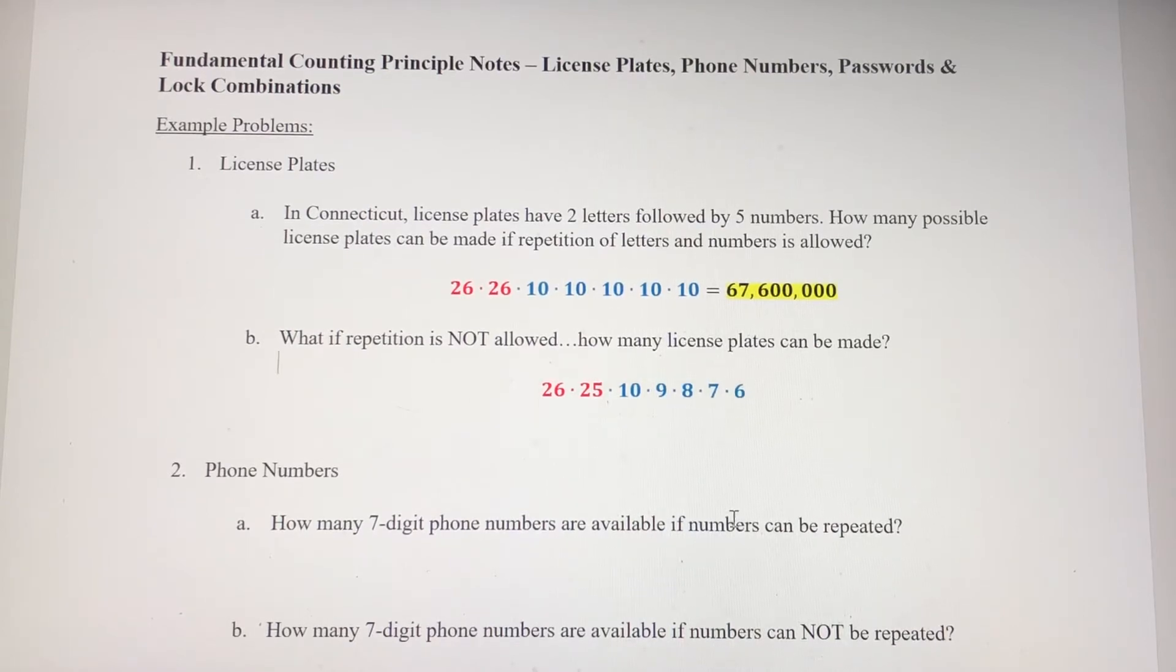So when I multiply these seven values together, you can see we eliminate a lot of possible license plates if we get rid of repetition. So we're down to 19,656,000. So a huge difference between those possibilities there when we take out repetition.